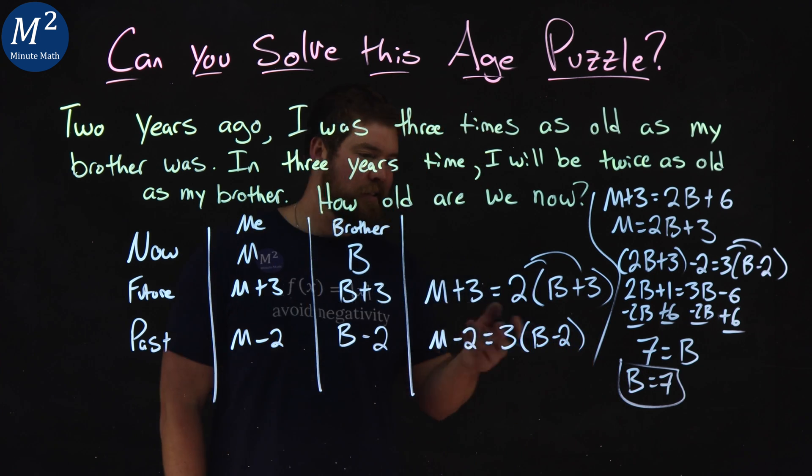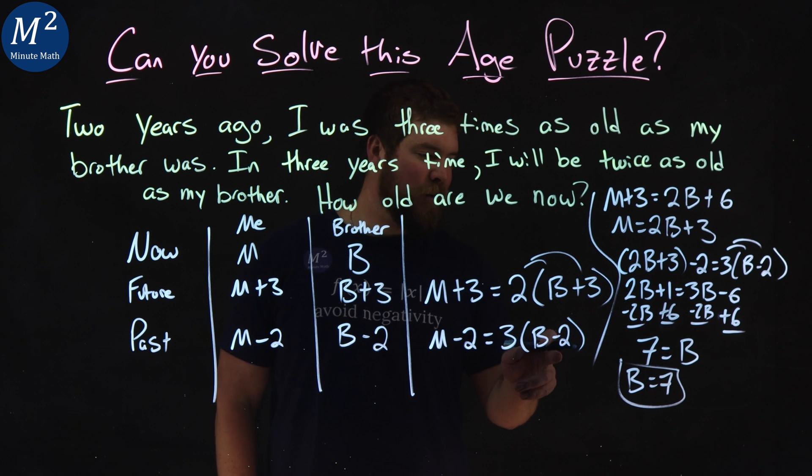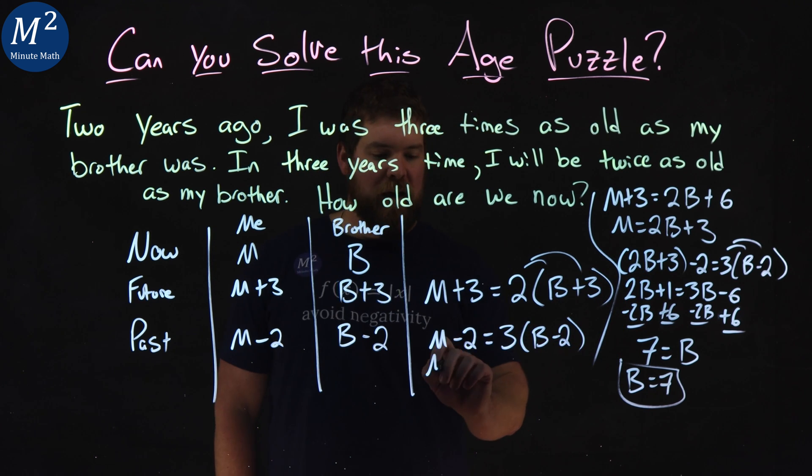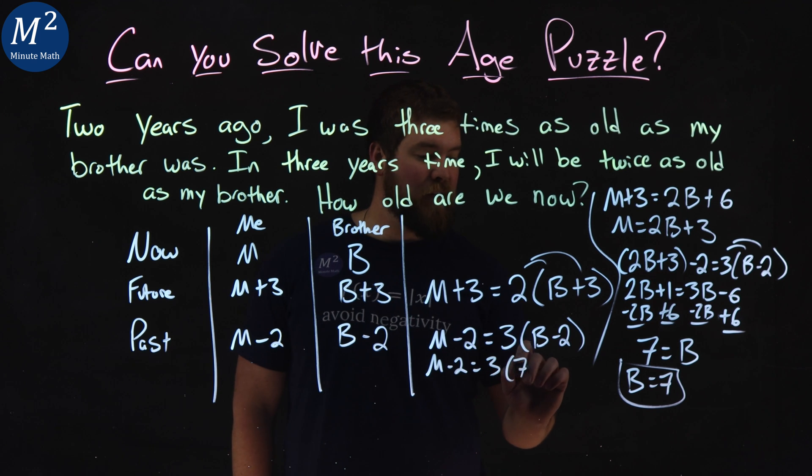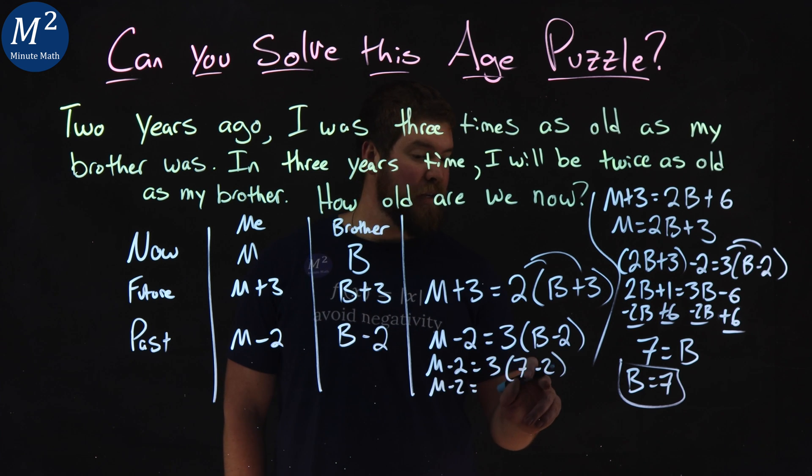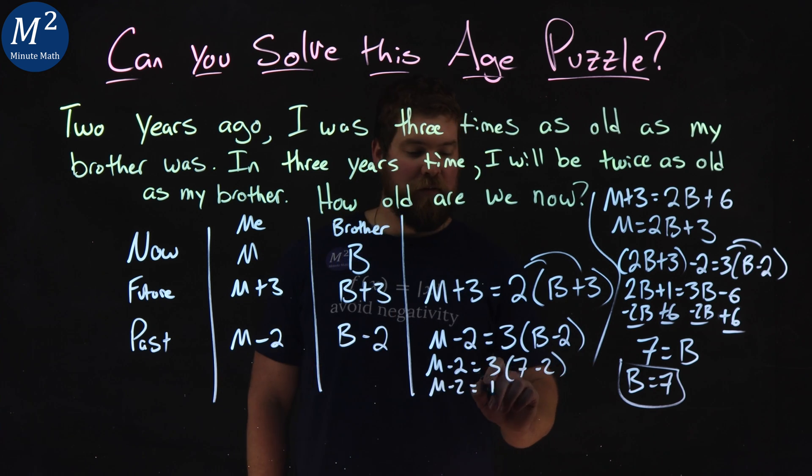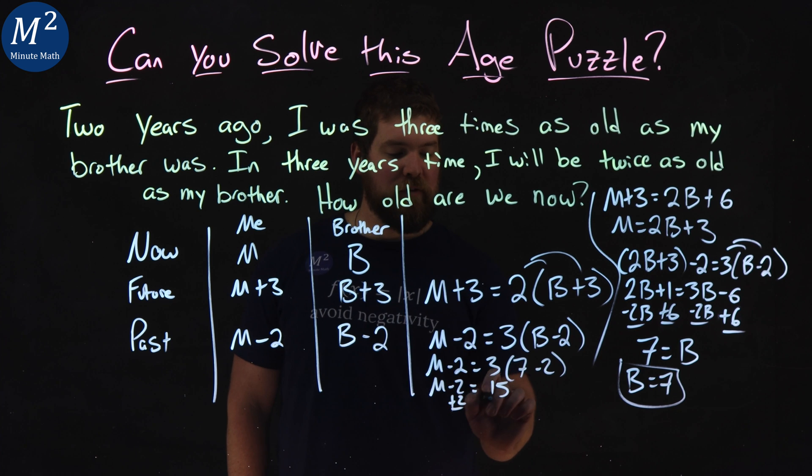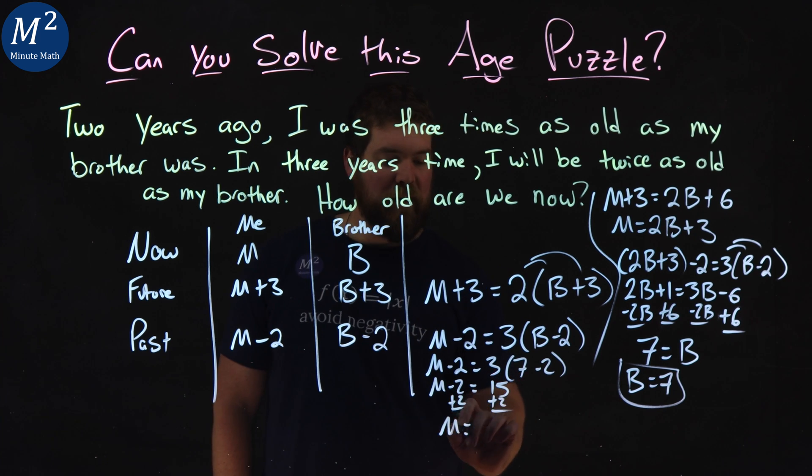So to do that, we just take one of these equations and plug B in. Let's do the second equation. M minus two equals three times B is seven minus two. Simplify that out. M minus two, seven minus two is five times three is 15. Add two to both sides, and M equals 17.